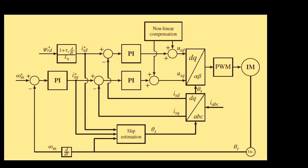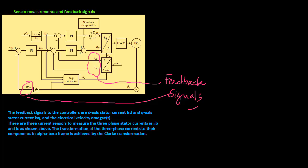As we watched in the last video, this is the diagram for nonlinear speed cascade control of induction motor. The feedback signals to the controllers are d-axis stator current isd and q-axis stator current isq, and the electrical velocity omega e.